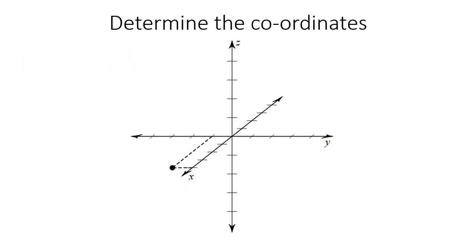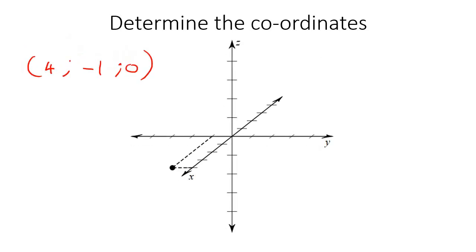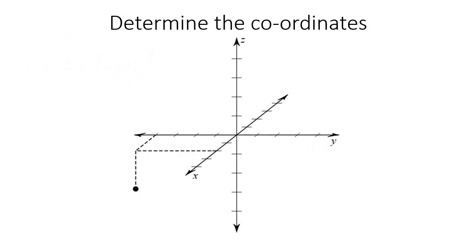We've got another example. For X, we went one, two, three, four. For Y, we went one back — so negative one. And for Z, we haven't gone up or down, so that would be zero. Don't just leave it blank — you must write zero. I'm using semicolons, but your teacher might use a comma, so just use whatever your teacher uses.